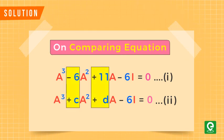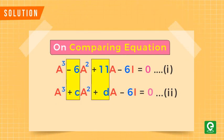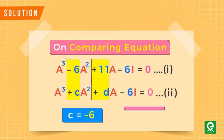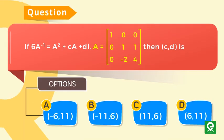On comparing equation 1 and equation 2, we get c equals minus 6 and d equals 11. Hence the correct answer is option A.